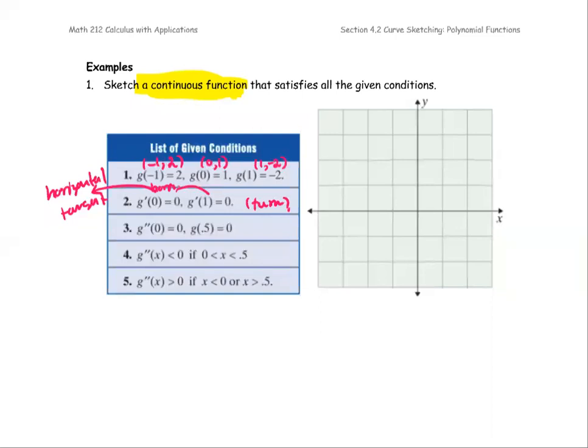The next information: g double prime equals 0 at 0, and g at 0.5 equals 0. So g at 0.5 equals 0 gives you the ordered pair 0.5 comma 0, where the g double prime will give you a critical value. A point of inflection might occur at that point.